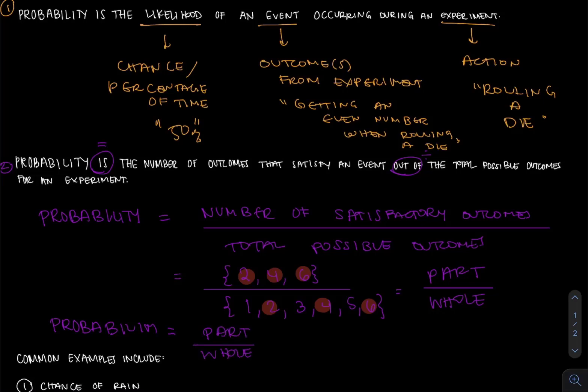Again, part stands for satisfactory outcomes or favorable outcomes divided by the total possible outcomes.